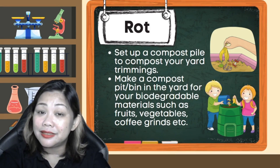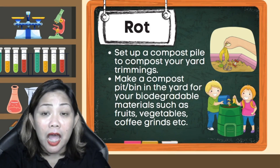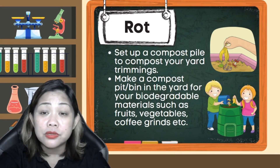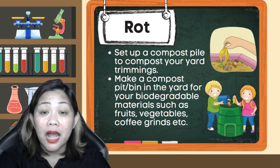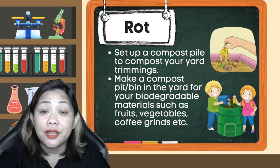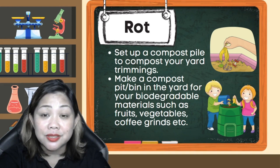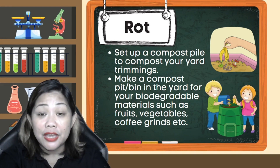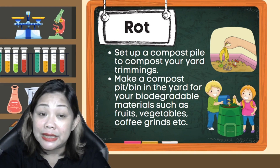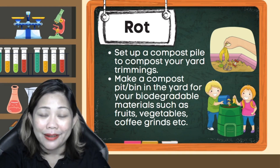Rot: Set up a compost pile to compost your yard trimmings. Make a compost pit or bin in the yard for your biodegradable materials such as fruits, vegetables, coffee grounds, and many more.